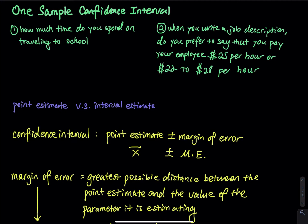The first question is: how much time do you spend on traveling to school? Do you usually answer like, I spend 20 minutes to travel to school? Do you say that I spend 20 minutes to travel to school, or do you prefer to say that I spend around 18 to 22 minutes to travel to school? Which answer is better? The answer is the interval is better. The 20 minutes, we call this a point estimate.